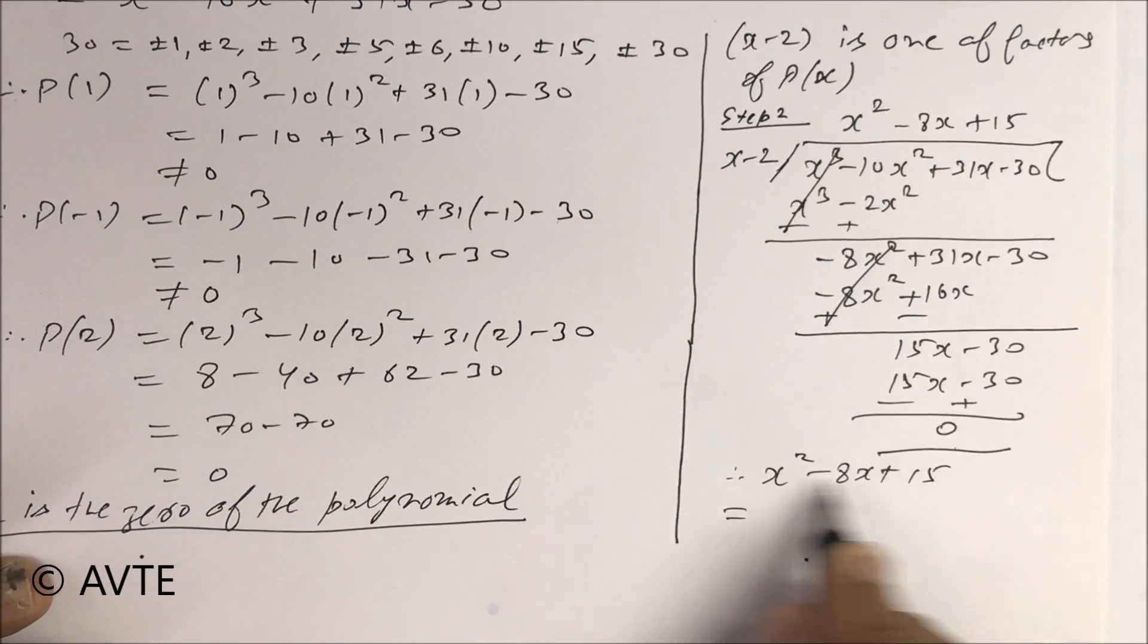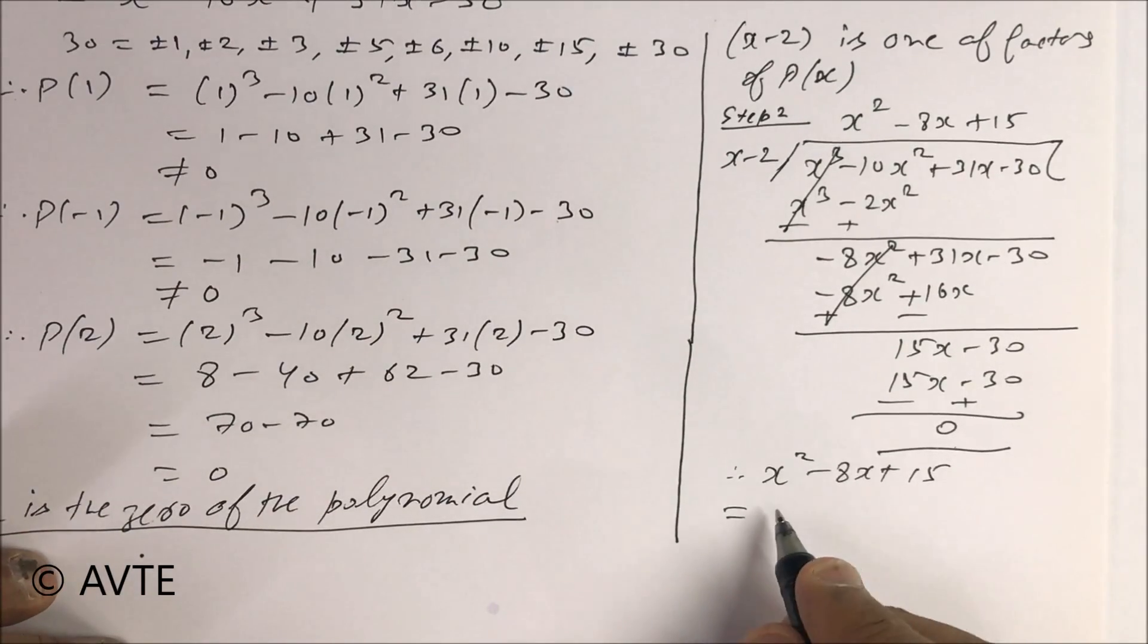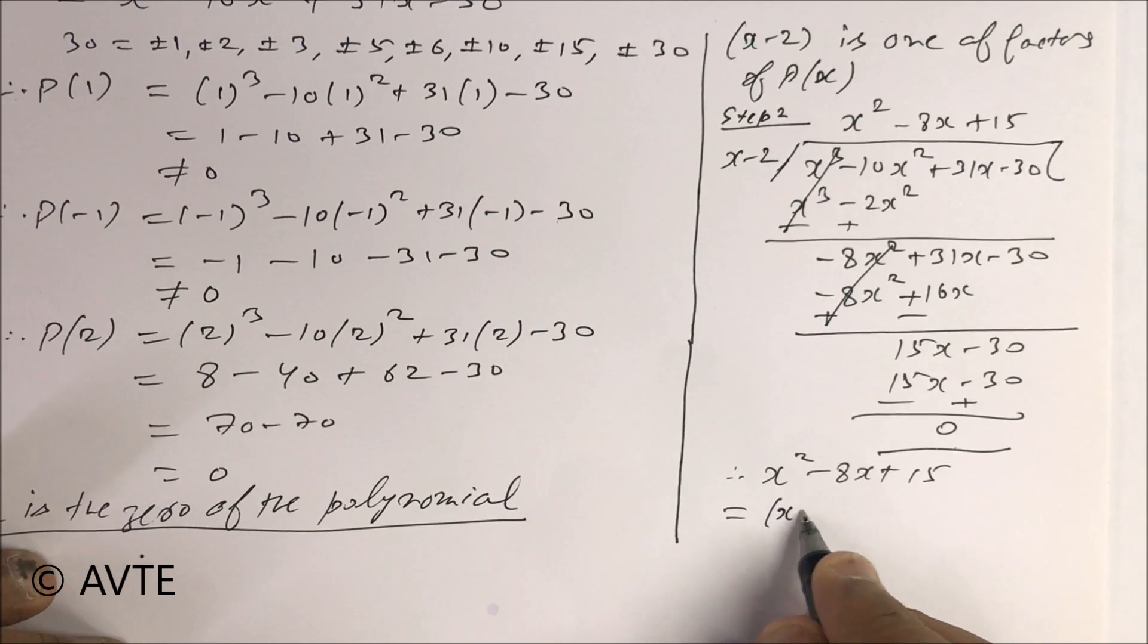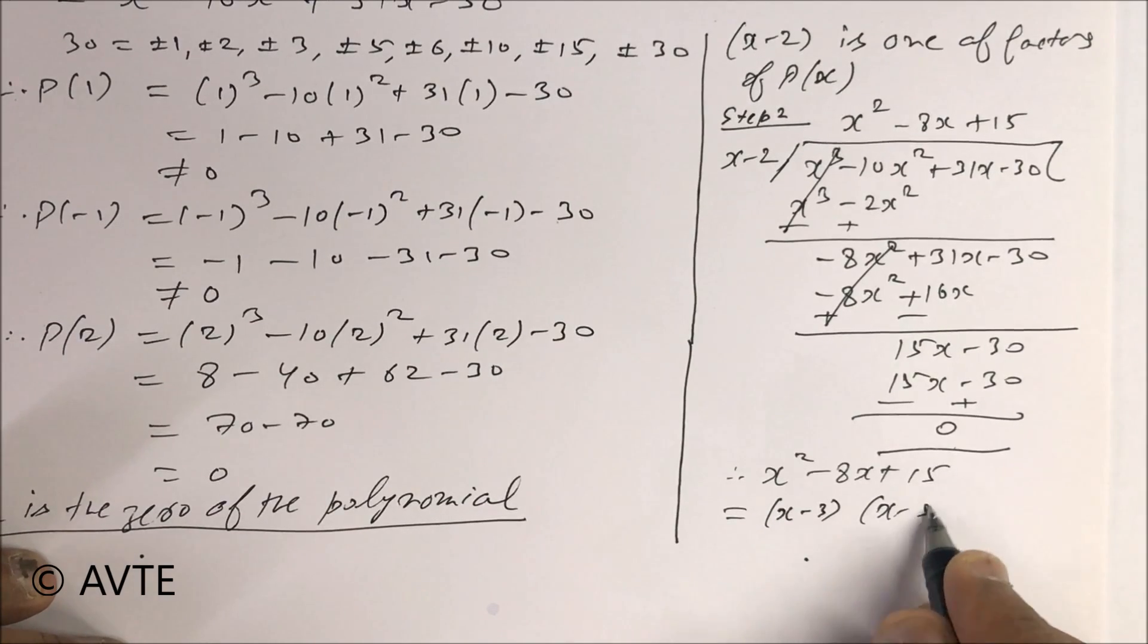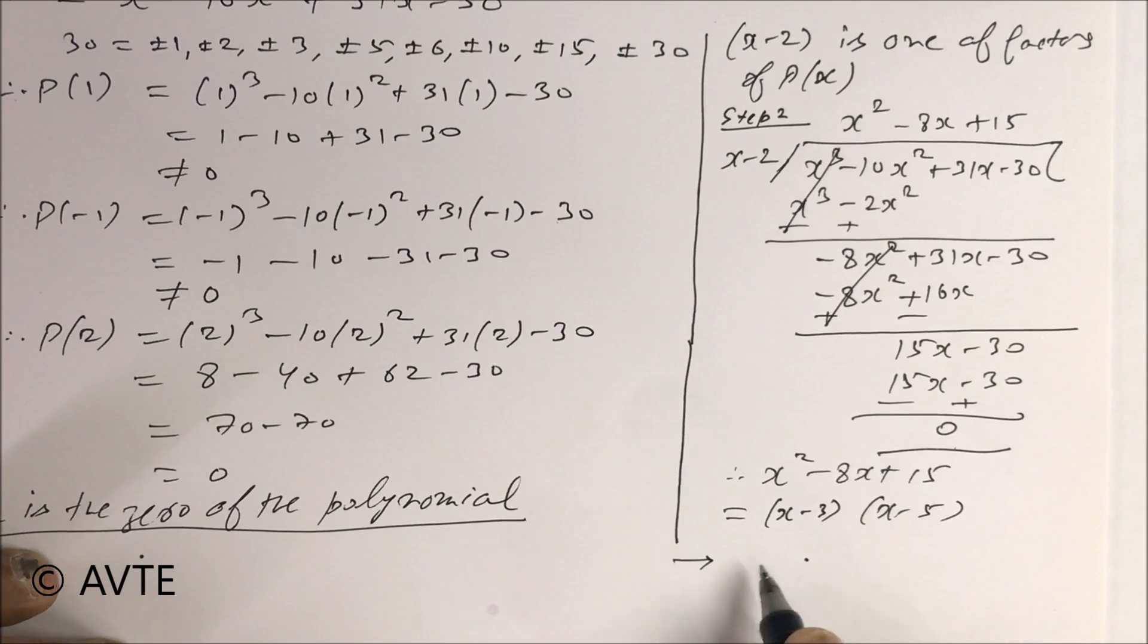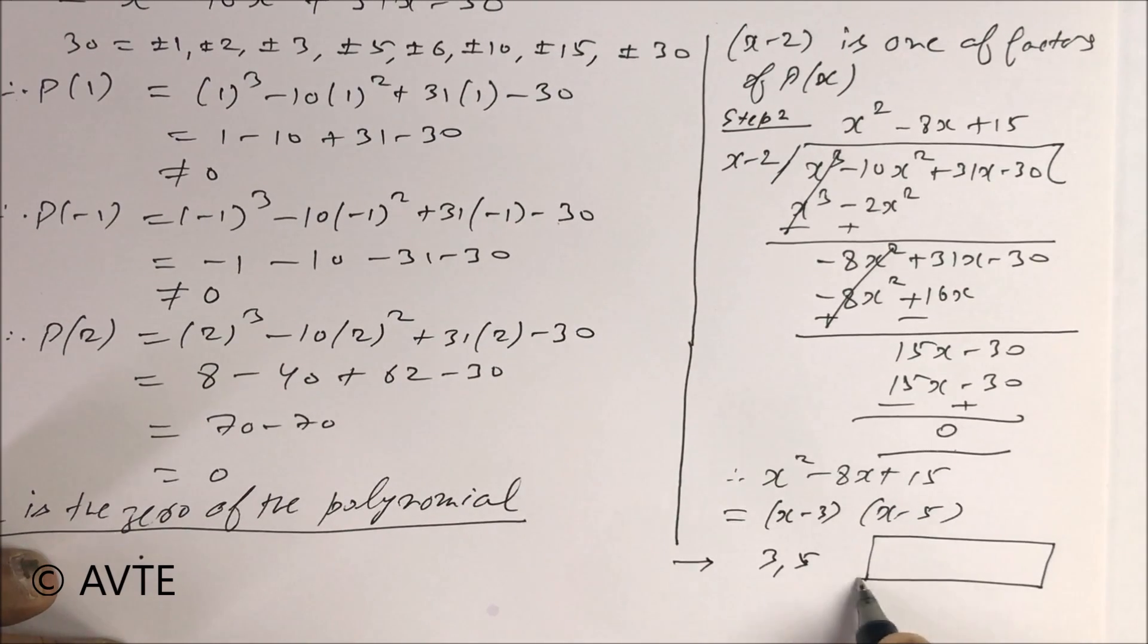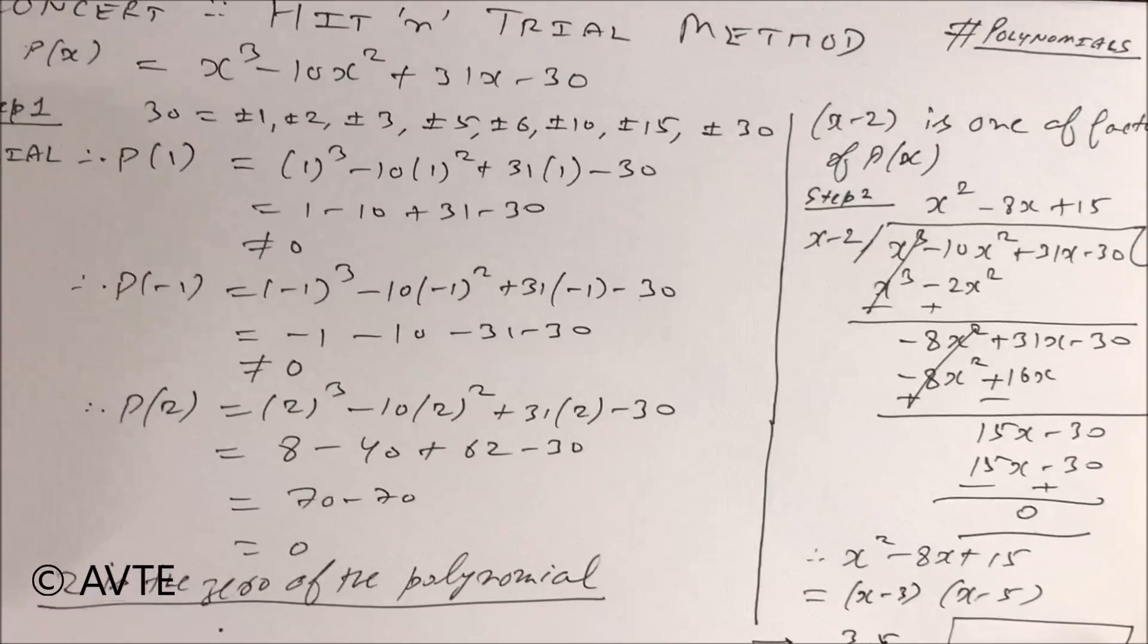You can do the middle term and you will get the answer of this as (x - 3) and (x - 5). So your other values are 3 and 5.